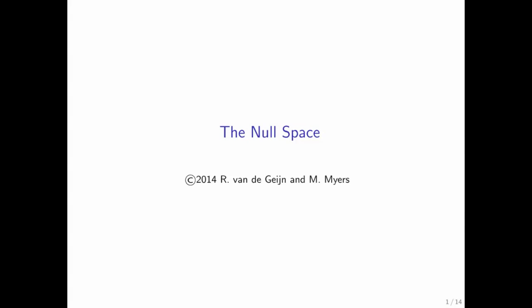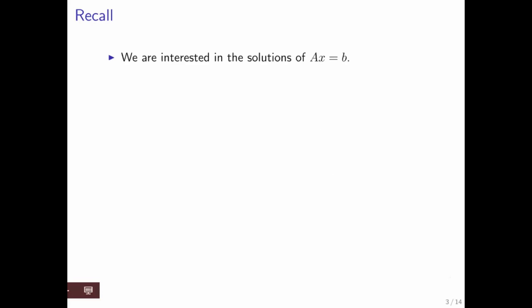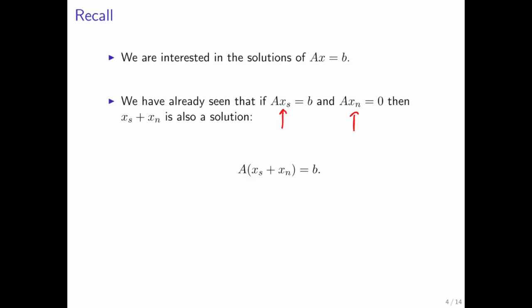The second really important subspace of R^n is known as the null space. Recall, we're interested in the solution of Ax = b. We've seen that if we have a specific solution and we have a solution that maps to 0, then adding those two vectors together gives you a solution.